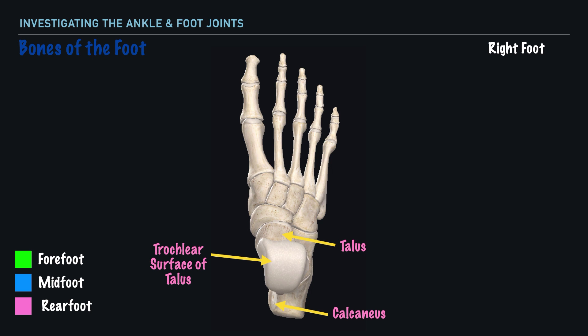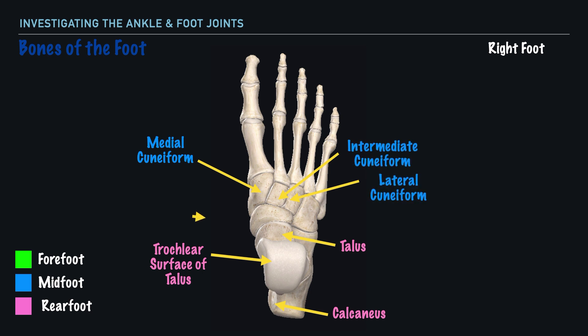Moving up to the midfoot, we have a group of bones called the cuneiforms. Within this group, we have the medial, intermediate, and lateral cuneiforms. In addition, we have the navicular and the cuboid. It's helpful to remember that the navicular is on the medial aspect of the foot and the cuboid is on the lateral aspect. The names of the cuneiforms follow their positioning: the medial cuneiform is on the medial aspect, the intermediate cuneiform is in the middle, and the lateral cuneiform is on the lateral aspect of the foot.